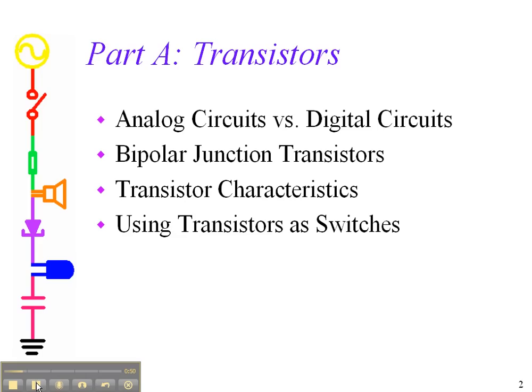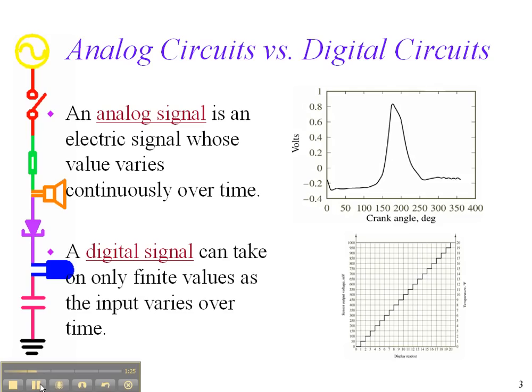So we're going to be looking at analog circuits versus digital circuits, which is this first topic. Bipolar junction transistors, which is the simplest and oldest form of the transistor—and indeed we'll be using that as our switch. We'll look a bit at transistor characteristics and transistors as switches. That's all in this first part of experiment six.